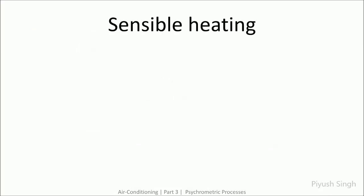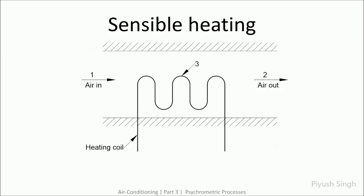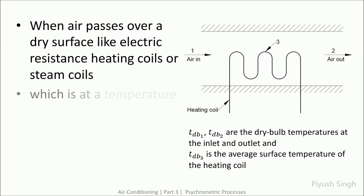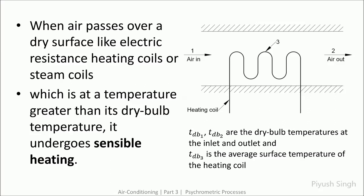The second process is sensible heating. If we have a heating coil — either an electrical heating element or a steam coil — at a temperature higher than the dry bulb temperature of incoming air, there will be net heat transfer from the coil to the incoming air and the outlet air will be at a higher dry bulb temperature. Since there is no moisture addition or dehumidification, the total moisture content remains the same at the outlet.